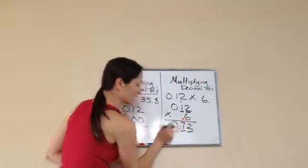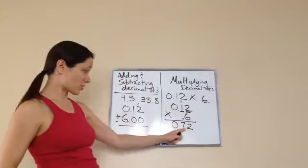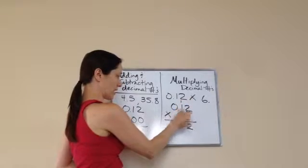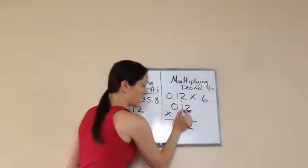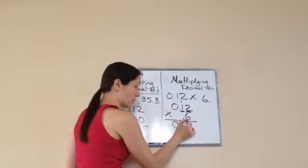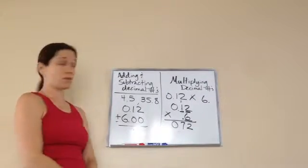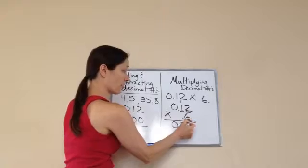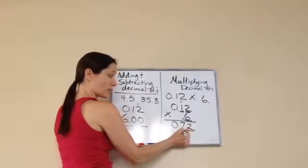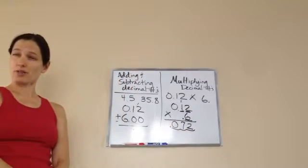So even though it looks like I just pulled it down, I really didn't. So let's say this said 0.6. For example, we would get the same answer, 7, 2 down here, because 6 times 2 is 12. We carry the 1, still get a 7, 6 times 0 is 0. But what would make it different is, not only do I have two spots after the decimal, I also have this spot. So how many spots after the decimals do I have? 1, 2, 3.